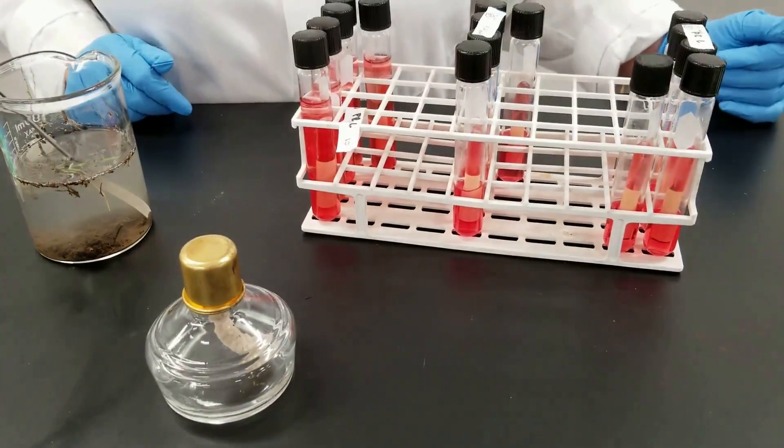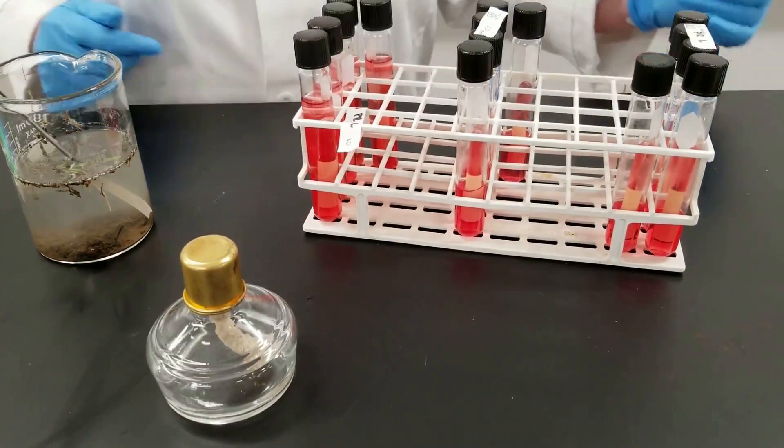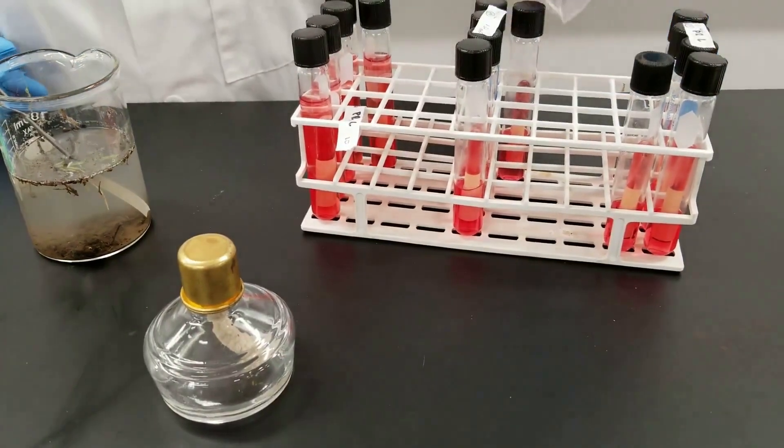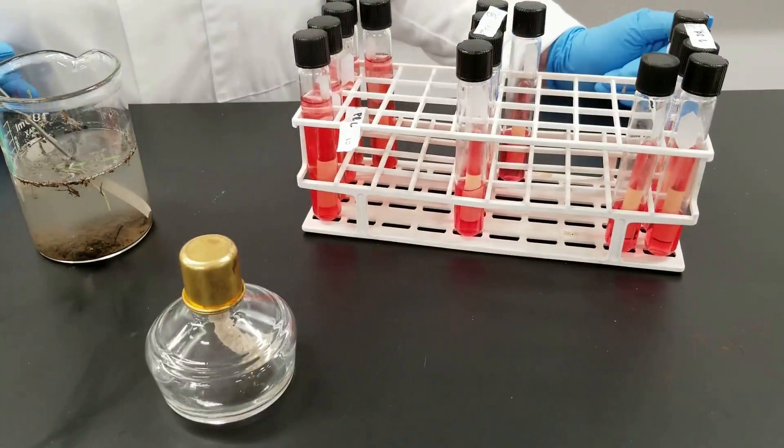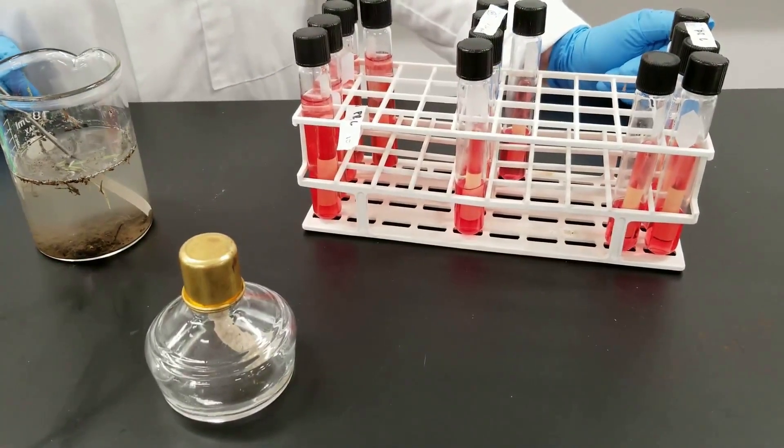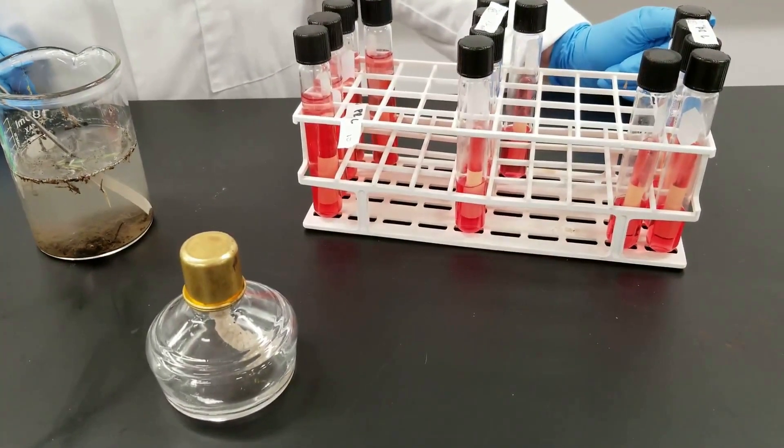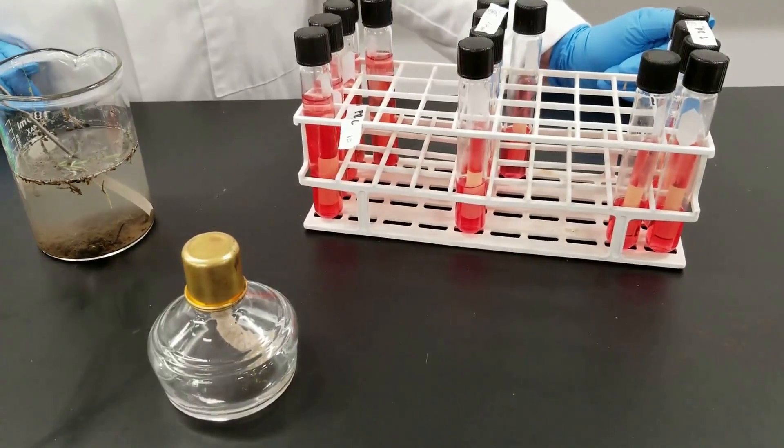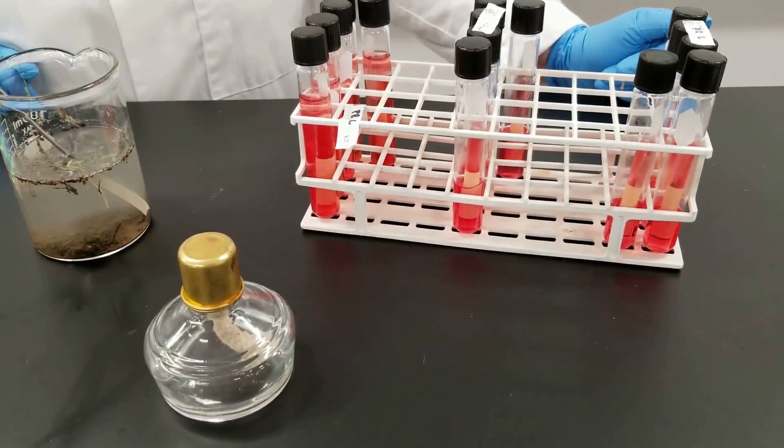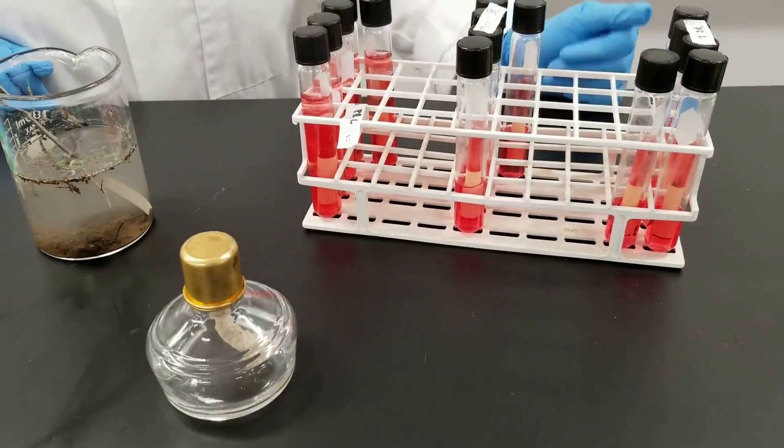We will see if gas is produced, has the phenol red pH indicator in it, so we can see if acid is produced, and we can compare at these three different dilutions. This will not give us an exact number, but it's an estimate of how many bacteria will be in the original sample of water.